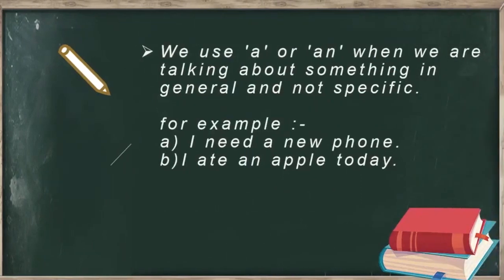We use 'a' or 'an' when we are talking about something in general and not specific. For example, 'I need a new phone' — we don't know which phone, we are talking about a phone in general, so we use 'a.' 'I ate an apple today' — we are not talking about any specific apple, we are talking about an apple in general, so we use 'an' before it.